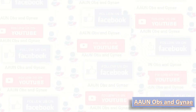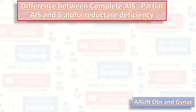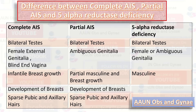Comparing complete AIS, partial AIS, and 5-alpha reductase deficiency: In complete AIS, there are bilateral testes, female external genitalia, a blind vagina, and sparse pubic and axillary hair with breast development. In partial AIS, there are bilateral testes and ambiguous genitalia, with partial masculine features and breast growth, and sparse pubic and axillary hair. In 5-alpha reductase deficiency, there are bilateral testes, female or ambiguous genitalia, and masculine secondary sexual characteristics.